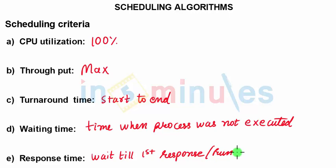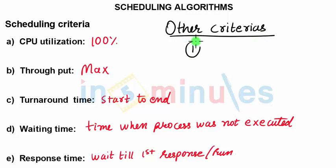Apart from this conventional criteria, there are other criteria also. These other criteria includes fairness which means nobody should be given more priority and nobody should be having to go through starvation.